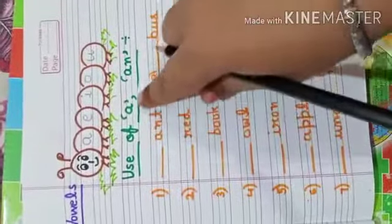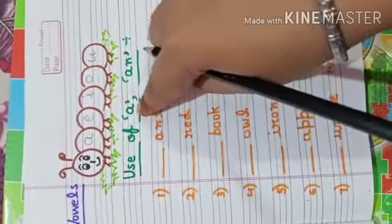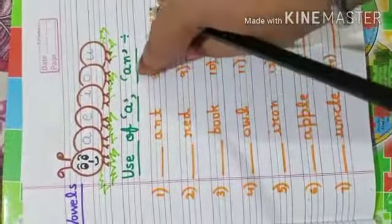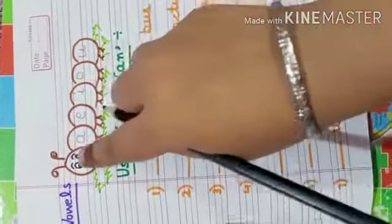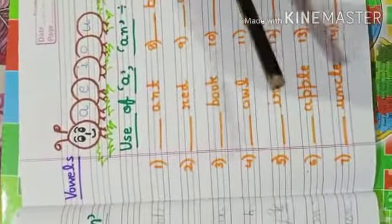Next, use of A and AN. A is used with consonants, and AN is used with vowels. Vowels are A, E, I, O, U. So kids, let's start.